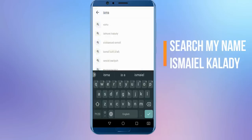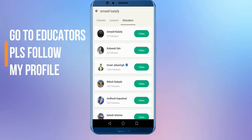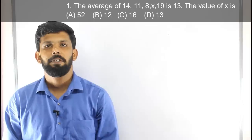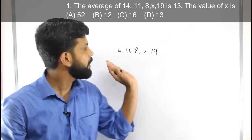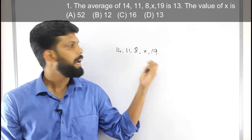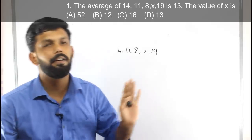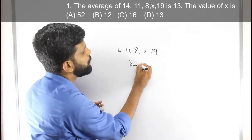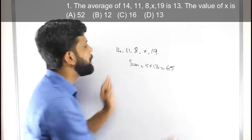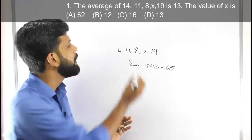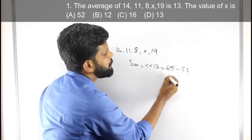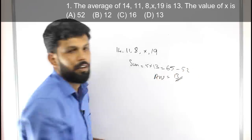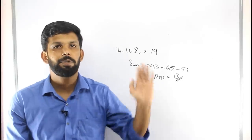This is the first question. The average of 14, 11, 8, X, 19 is 13. The average of these 5 numbers is 13, so their total sum is 65. Adding 14 + 11 + 8 + 19 = 52, so X = 65 − 52 = 13. The right answer is D, 13.